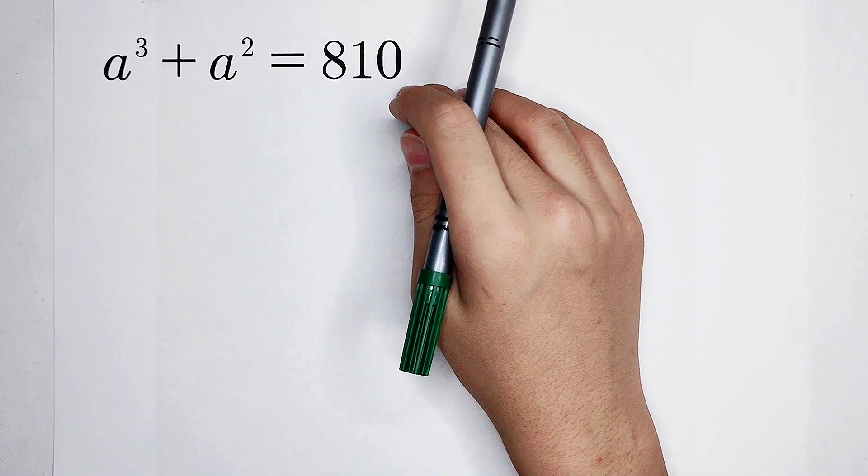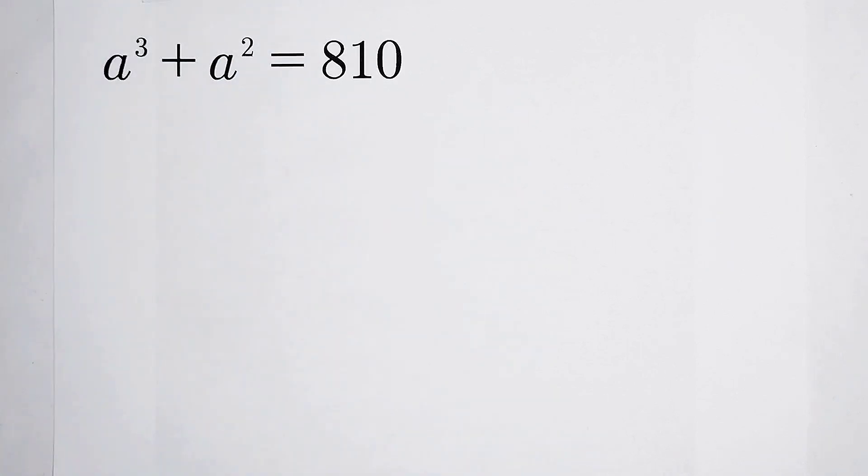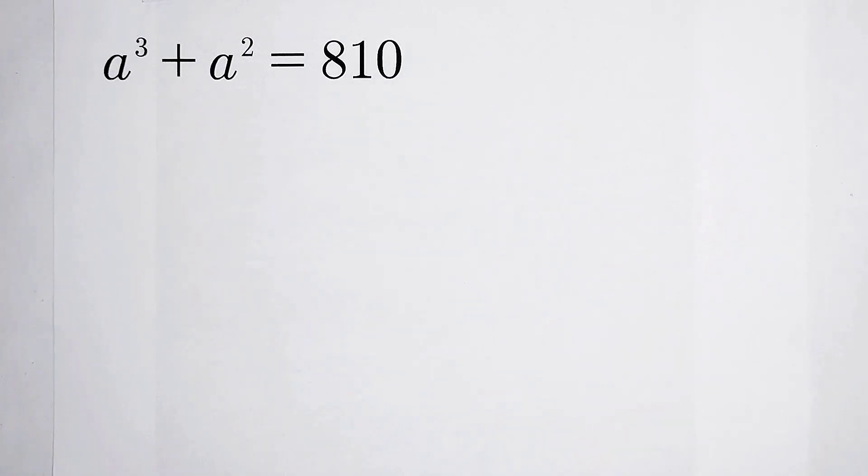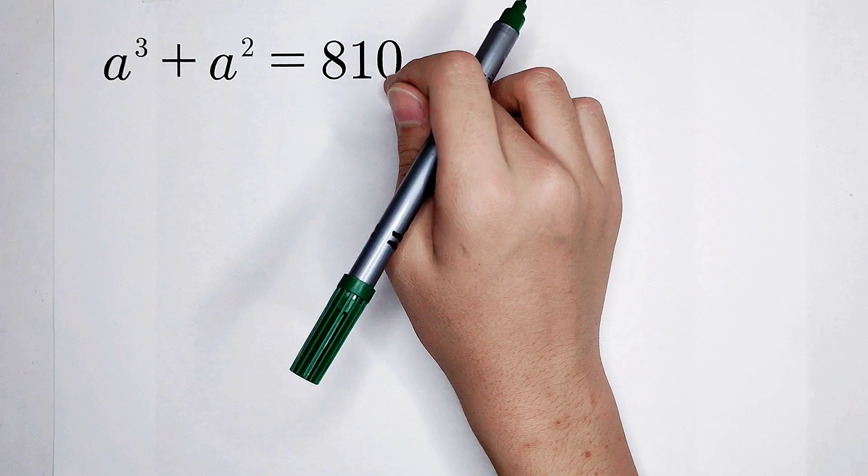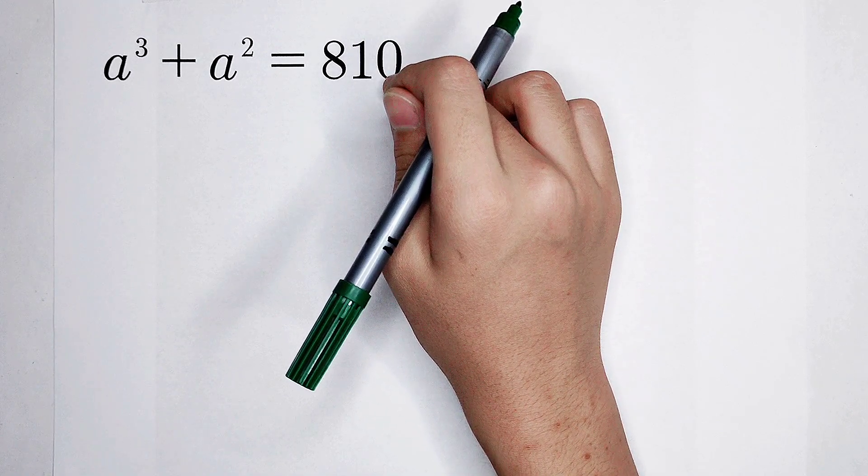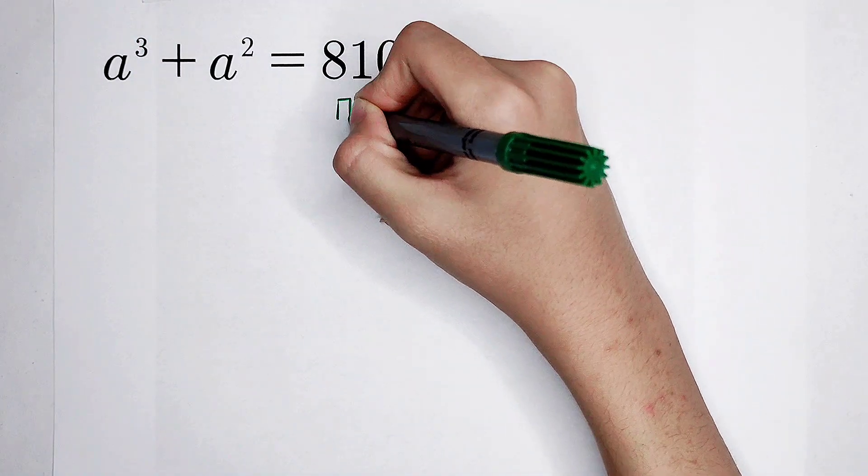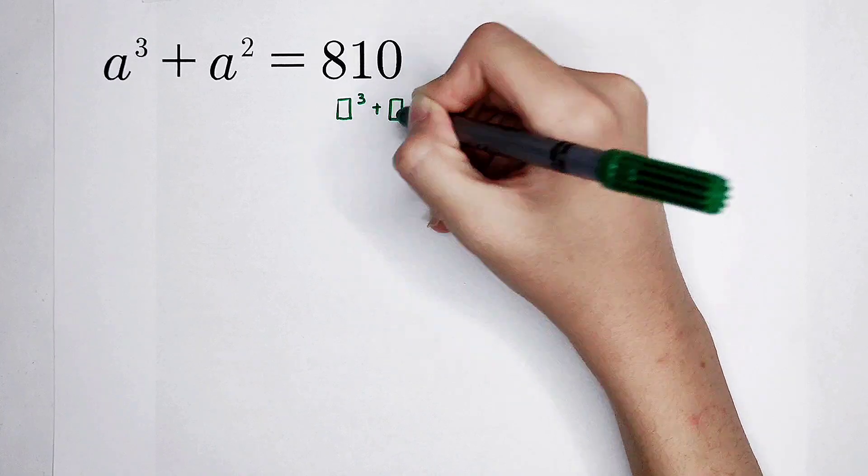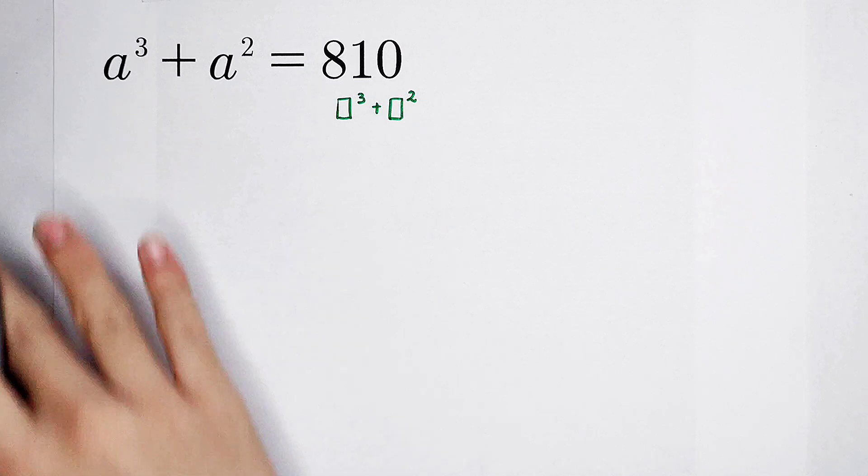And 3 is the highest exponent. For dealing with this kind of question, we're going to use inspection. 810, I hope it can also be written as something cubed plus something squared, just like the left side.